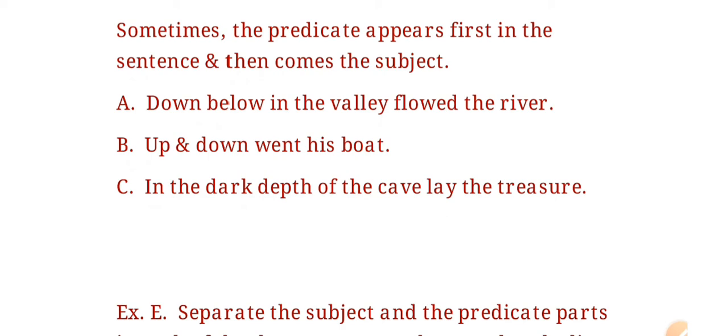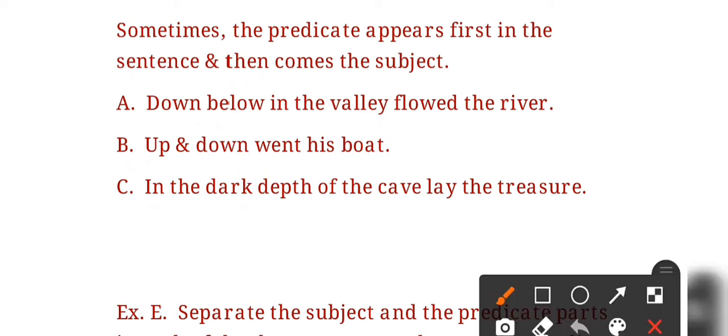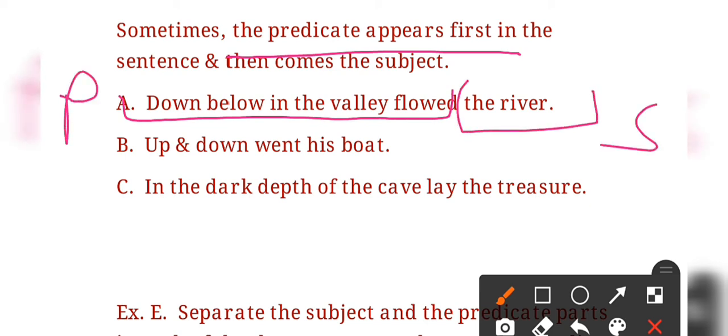Sometimes the predicate appears first in the sentence and the subject comes later. It is not always necessary that the subject comes first. For example: 'Down below in the valley flows the river.' Here 'down below in the valley flows' is the predicate and 'the river' is the subject, which comes at the end.